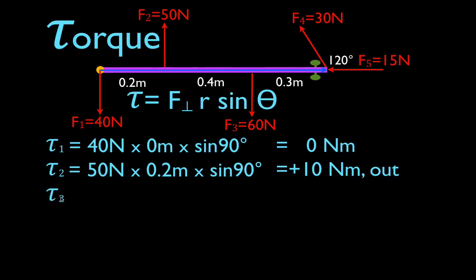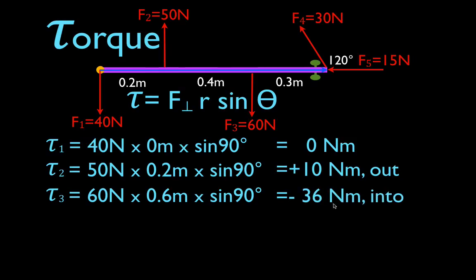The torque due to force number three — force number three is 60 newtons, and the lever arm is 0.6. We calculate 60 newtons times 0.6 times the sine of 90 degrees, and we get that that force produces a torque with a magnitude of 36 newton meters. This force would cause the object to rotate in the clockwise direction. Forces that cause objects to rotate in the clockwise direction produce negative torque, so you must include the negative sign. When the object rotates clockwise, the direction of the torque vector is into the board.